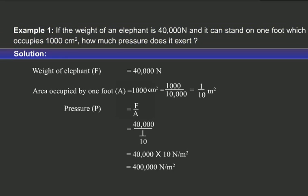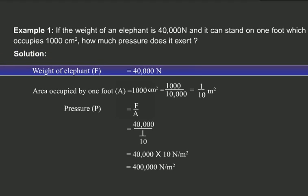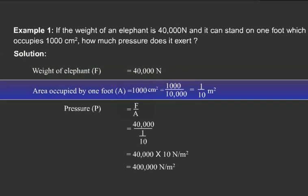Here is the solution. Students, the weight of the elephant, or F, is equal to 40,000 Newton. The area occupied by one foot, or A, is equal to 1,000 centimeter square. Now, converting it into meter square, we divide it by 10,000, and hence we get 1 by 10 meter square.